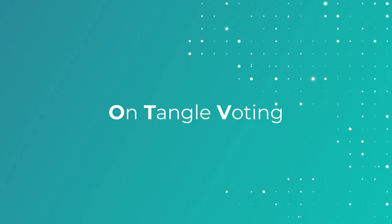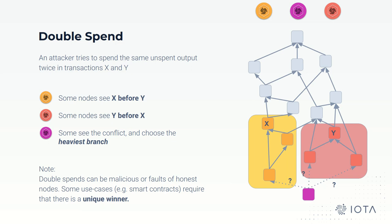By leveraging the approval weight, we introduce the On-Tangle Voting mechanism, called OTV. To make sure OTV is robust, it needs to resolve the double-spend problem. Note that a double-spend might be introduced by malicious reasons or just faulty reasons due to some use cases, for example smart contracts. There should always be a unique winner for the double-spend, because different nodes might have different local Tangles — some nodes see branch S first, some see branch Y first, and some see the two conflicting branches at the same time. They will choose the heaviest branch to attach their block.